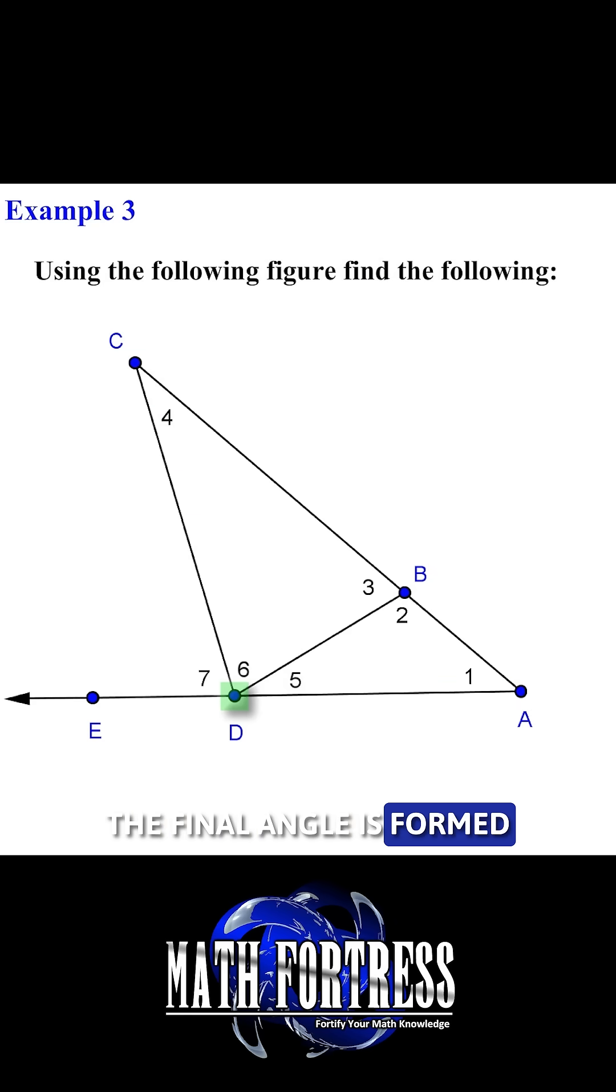The final angle is formed by the sum of angle 7, 6, and 5 and can be named as angle EDA or angle ADE. This is another example of a straight angle.